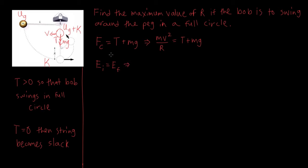The initial energy is denoted E_i. Initially, all the energy is stored in potential energy U_g. When we let go of the pendulum, all that potential energy is converted fully into kinetic energy at the bottom as it swings from its horizontal position to the bottom. So all of the potential energy is fully transferred into kinetic energy at the bottom.